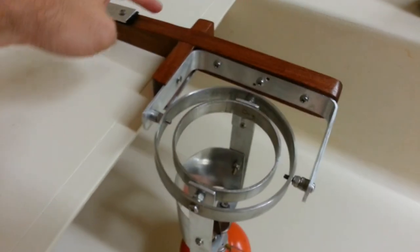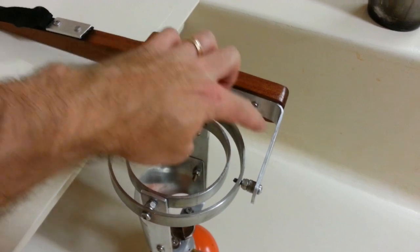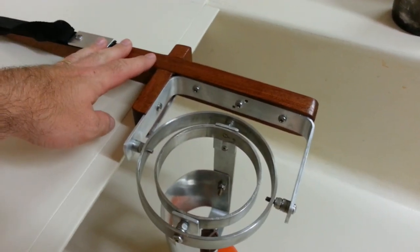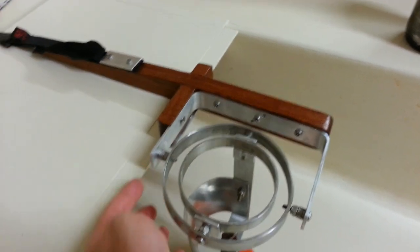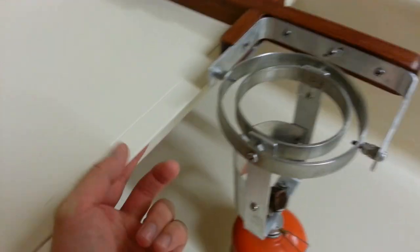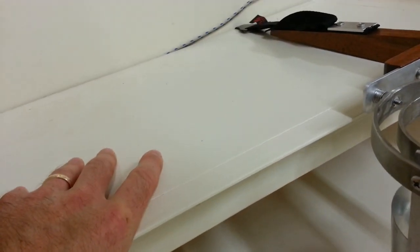So I built this mount out of mahogany and aluminum. It's much more secure. It has a little lip in the front here that clips over this lip on this little removable seat I built for my boat.